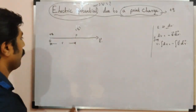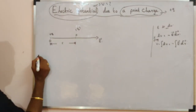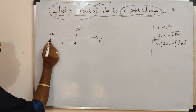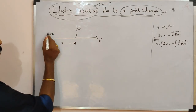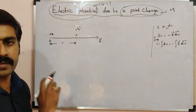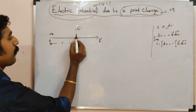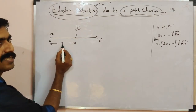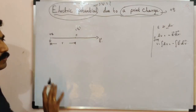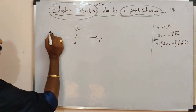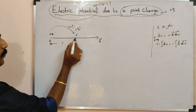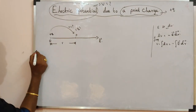Consider a point charge placed at point O. Due to the point charge, an electric field is produced and the direction of the electric field is outwards. Take a point P at a distance small r from the origin, from the positive charge plus Q. We need to calculate the electric potential at point P.